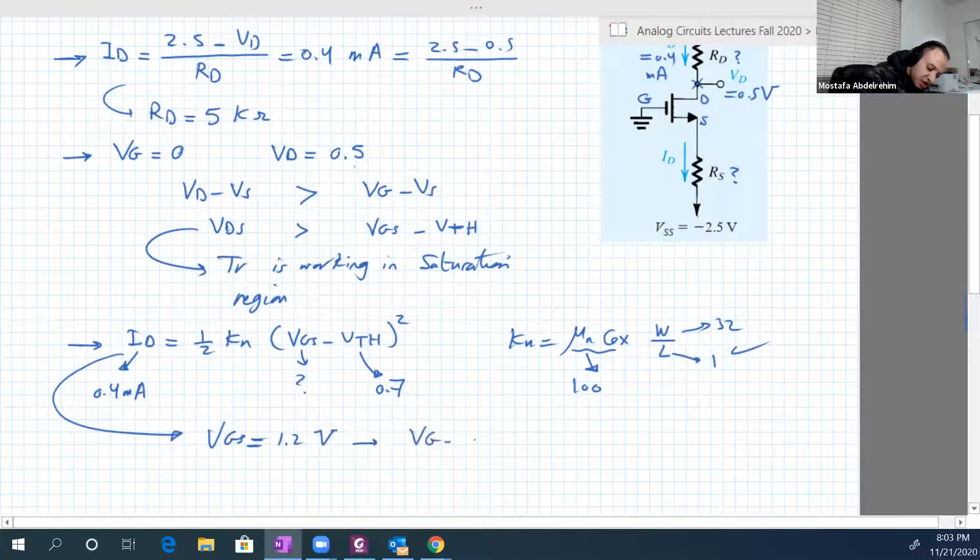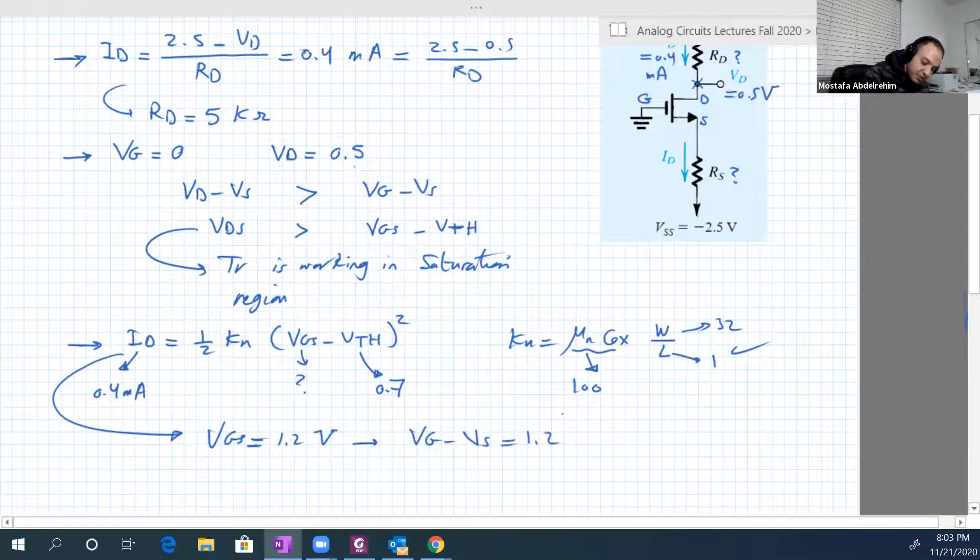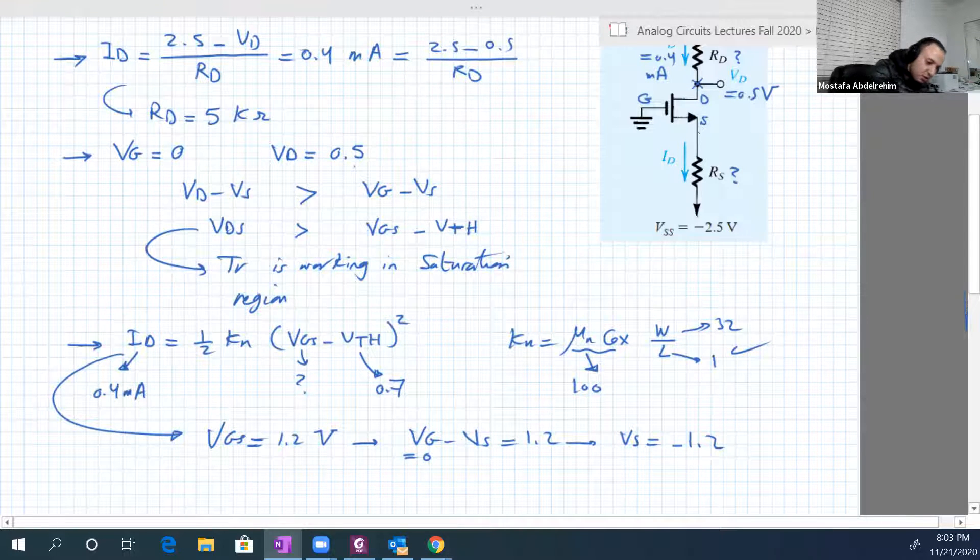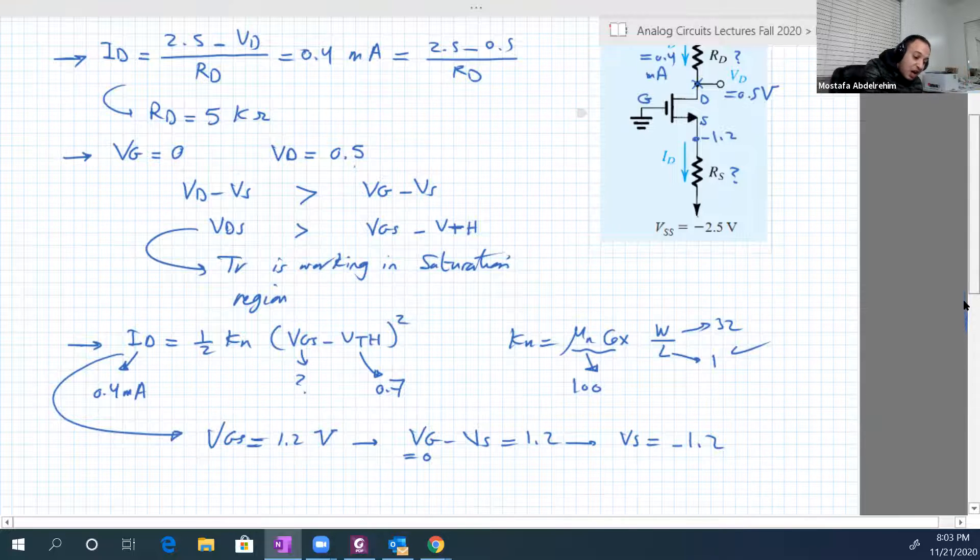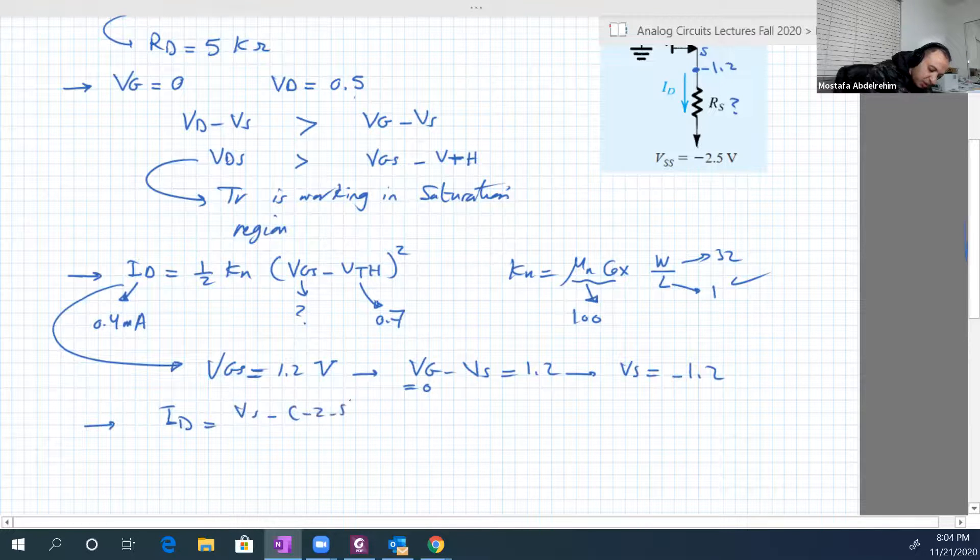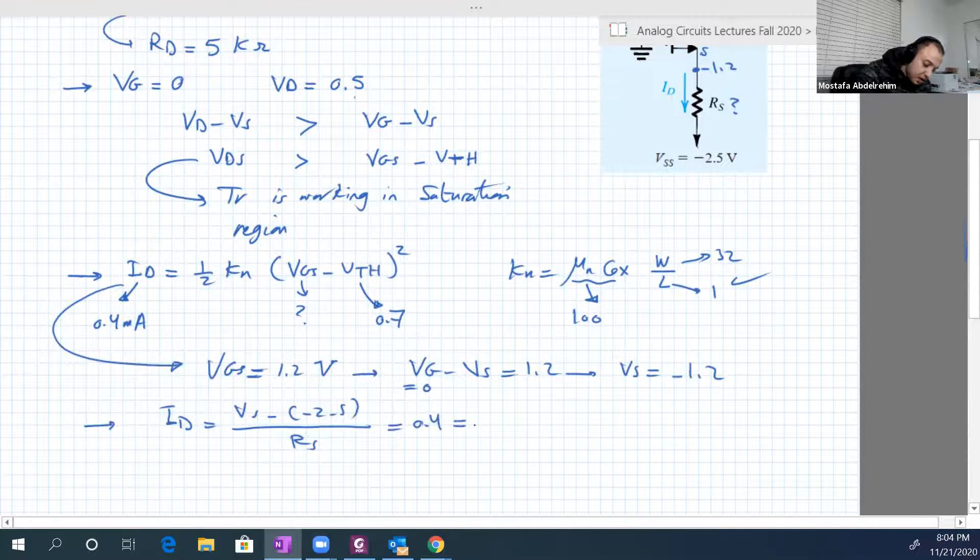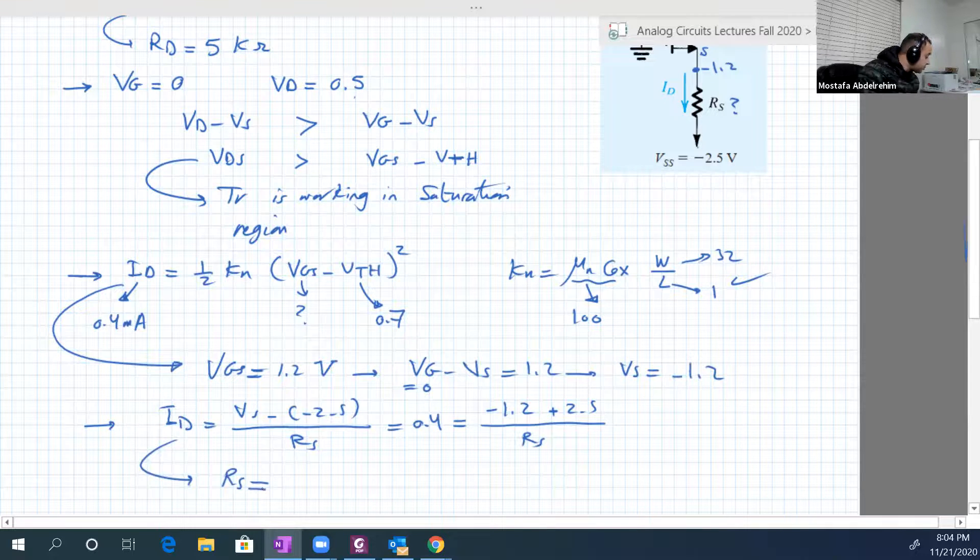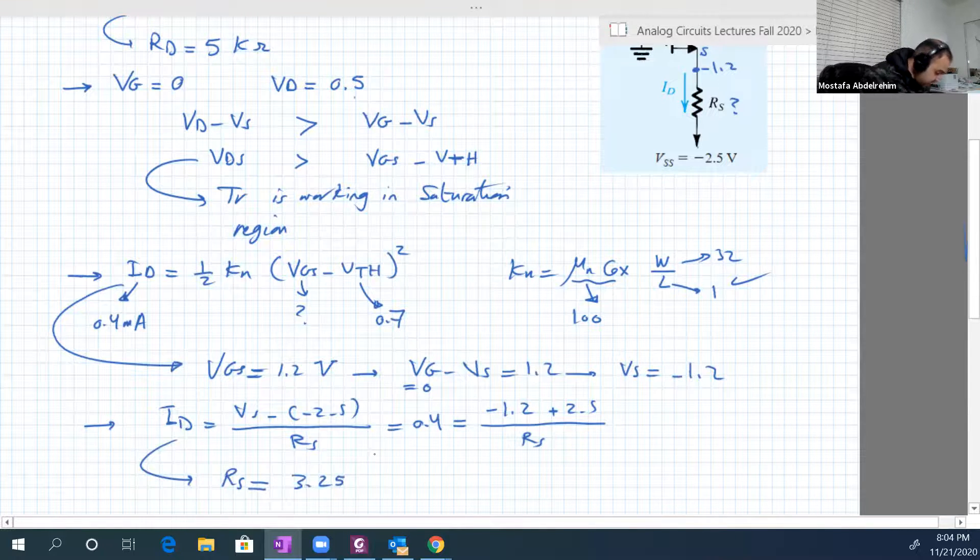The only unknown here is VGS. From that equation we can calculate VGS, VGS would be 1.2 volt. This equals VG minus VS equals 1.2. VG is 0, so VS equals minus 1.2. We know now the voltage at the S point is minus 1.2 and the ID also equals VS minus minus 2.5 over RS, which is 0.4 milliamperes. From that, RS is equal to 3.25 kilo ohms.